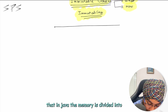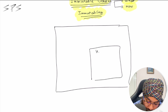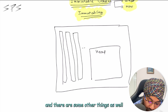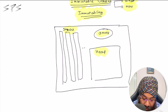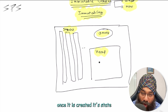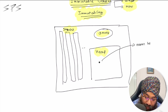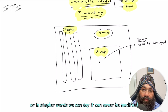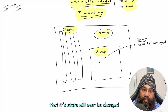You must be aware that in Java, the memory is divided by and large into heap and stacks, and there are some other things as well. The meaning of immutability is whenever you create any object on the heap, once it is created, its state will never be changed. In simpler words, we can say it can never be modified. The correct technical definition is that its state will never be changed.